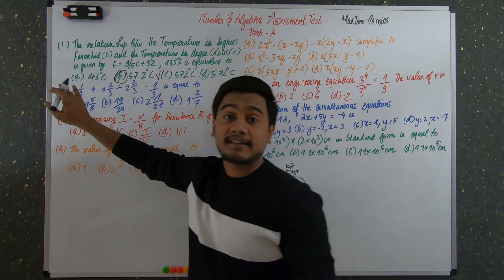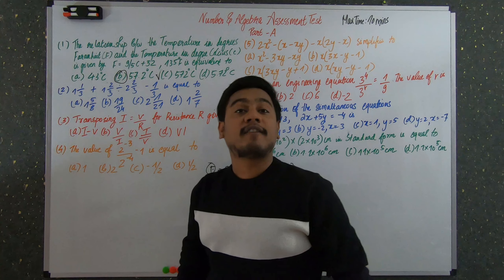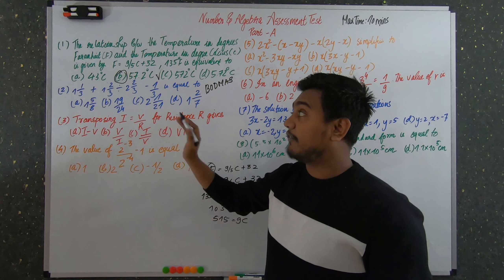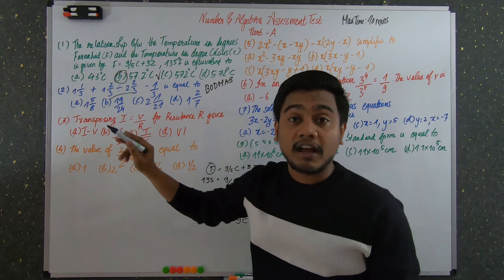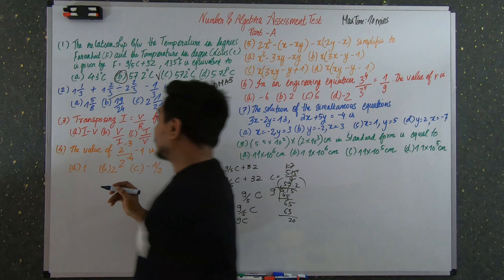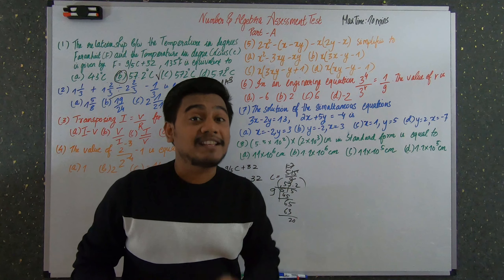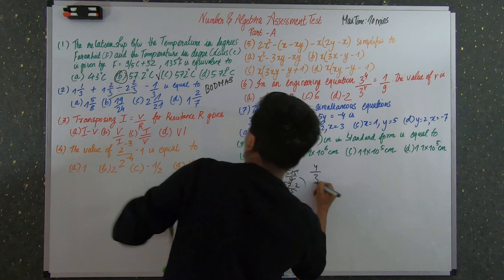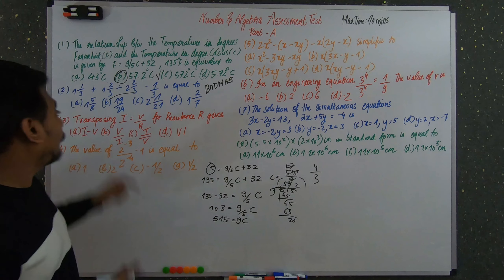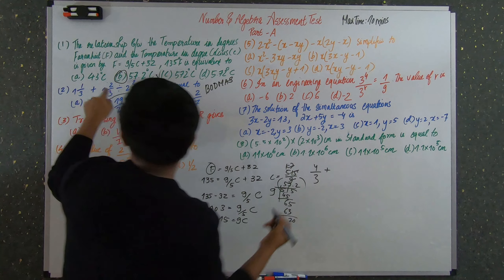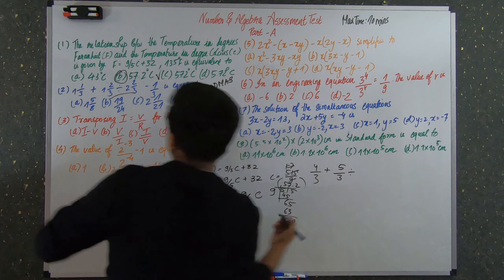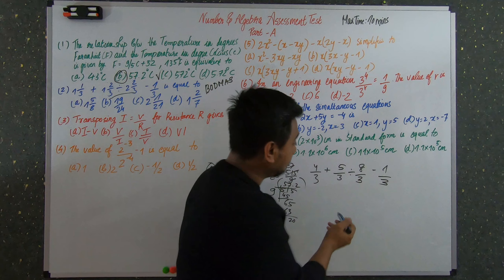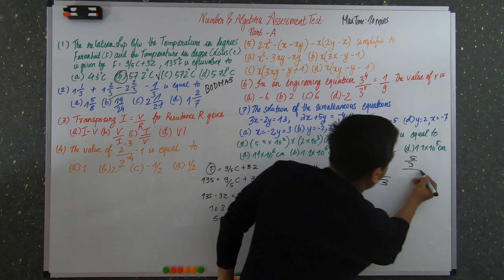The operators are plus, division, and minus. Remember the BODMAS rule: Brackets, Division, Multiplication, Addition, Subtraction — so perform division first. Also, whenever there is a mixed fraction, convert it to an improper fraction first. So 1⅓ = 4/3, 1⅔ = 5/3, and 2⅔ = 8/3. The expression becomes (4/3 + 5/3) ÷ (8/3 − 1/3).